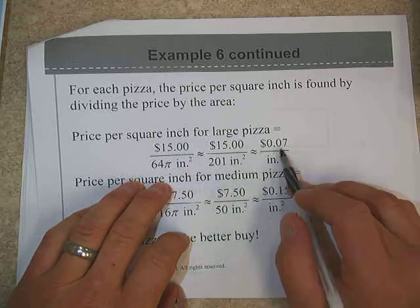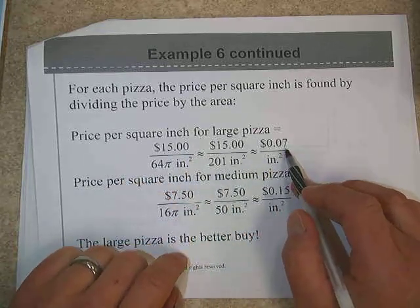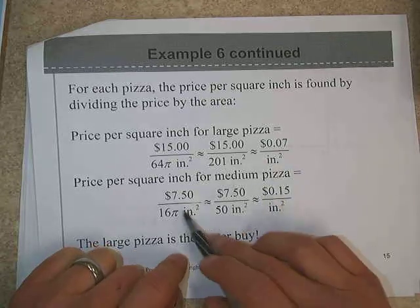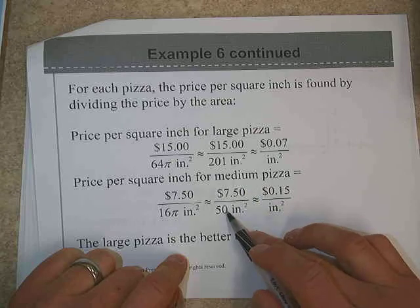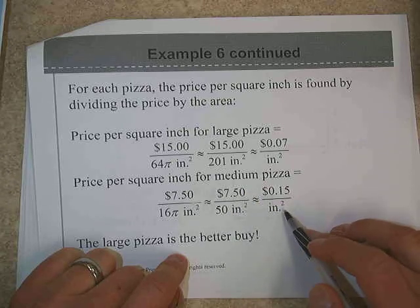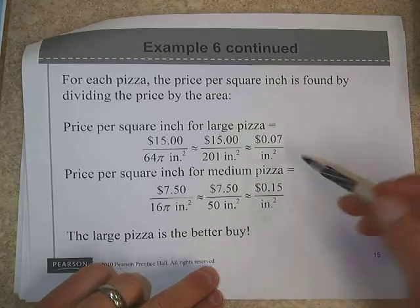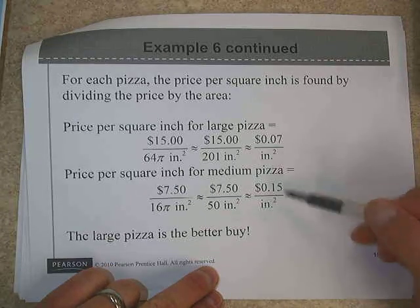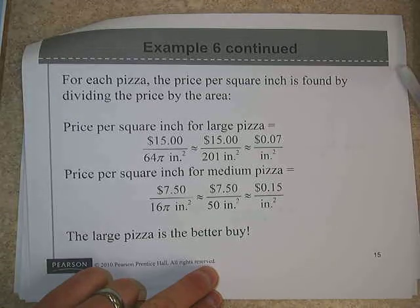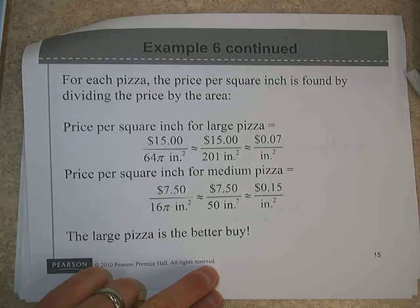So if we take the price of the big pizza divided by the number of square inches in the big pizza, we end up with 0.07 to the nearest cent, so it's 7 cents per square inch. Whereas the smaller pizza, the medium size, 7.50 divided by 50, is 0.15 per square inch. So which is the better buy? Well, of course, the bigger one is the better buy. It's only 7 cents per square inch, whereas this one is 15 cents per square inch.